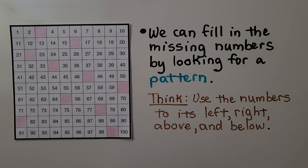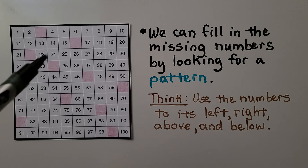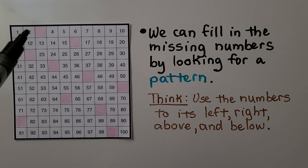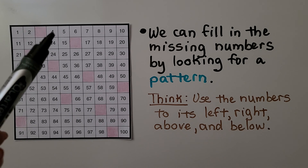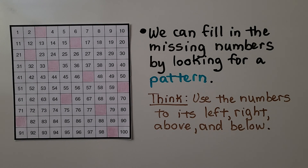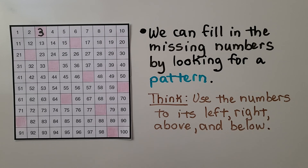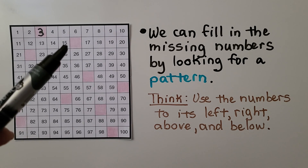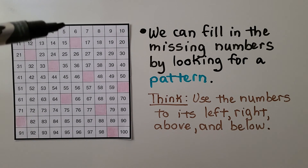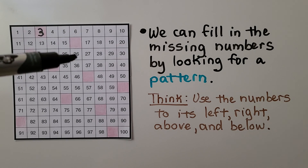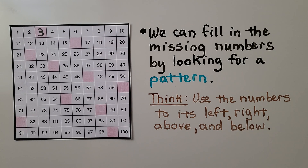Here we have a 100 chart with missing numbers. We can fill in the missing numbers by looking for a pattern using the numbers to its left, to its right, above it, and below it. Here we have a missing number: we have 1, 2, the missing number, then 4, 5, 6. If you said 3, you're right. The next missing number — we can look left, right, above, and below. If you said 16, you're right.